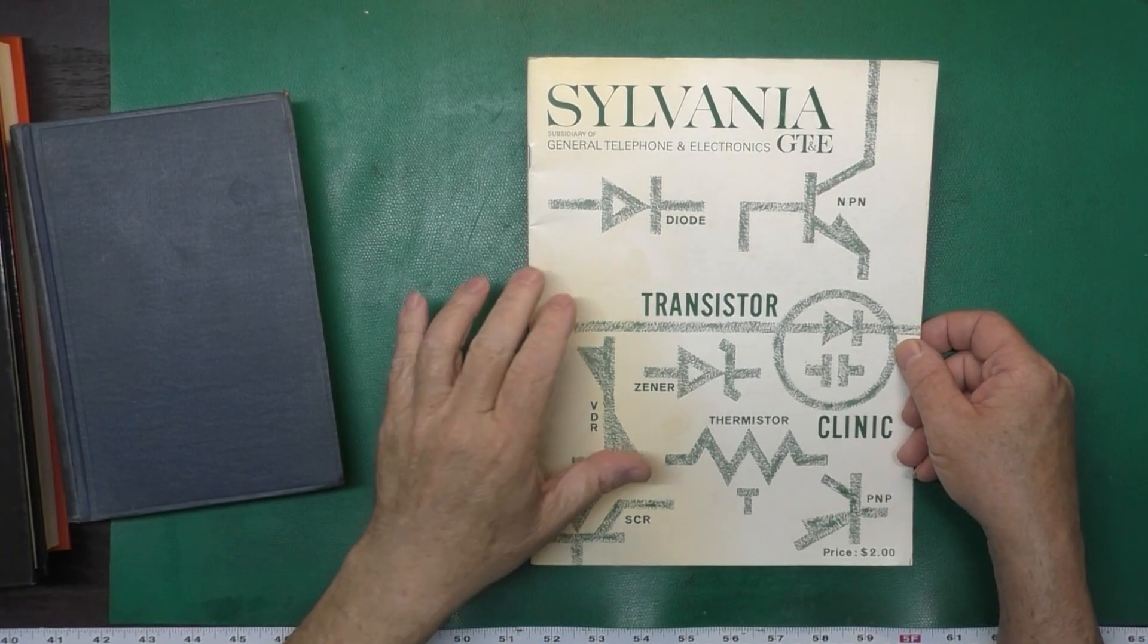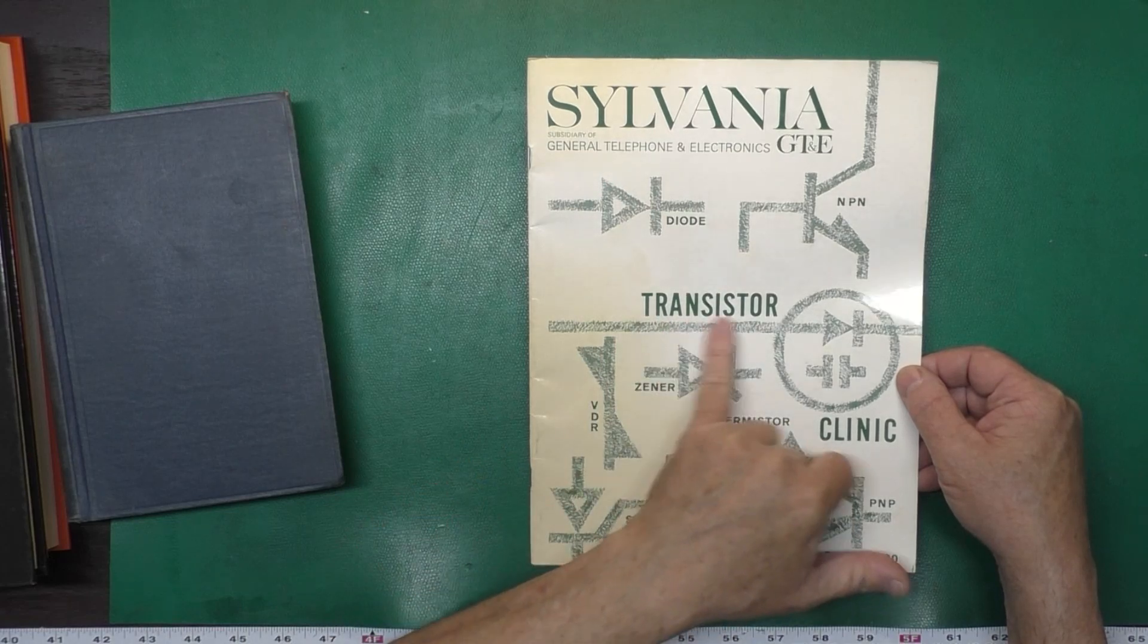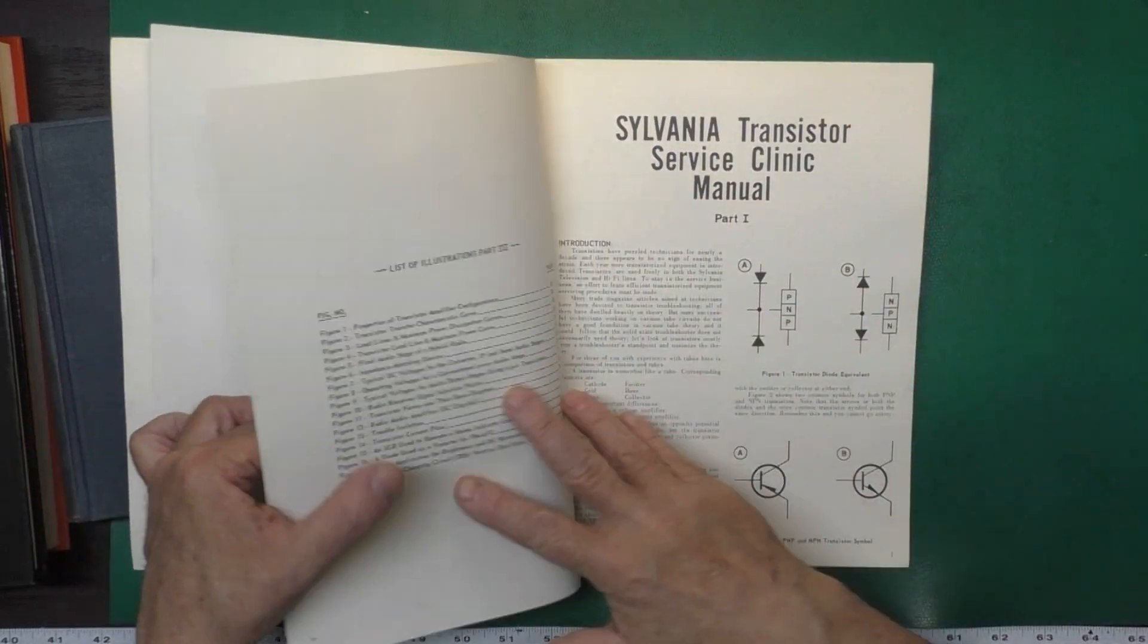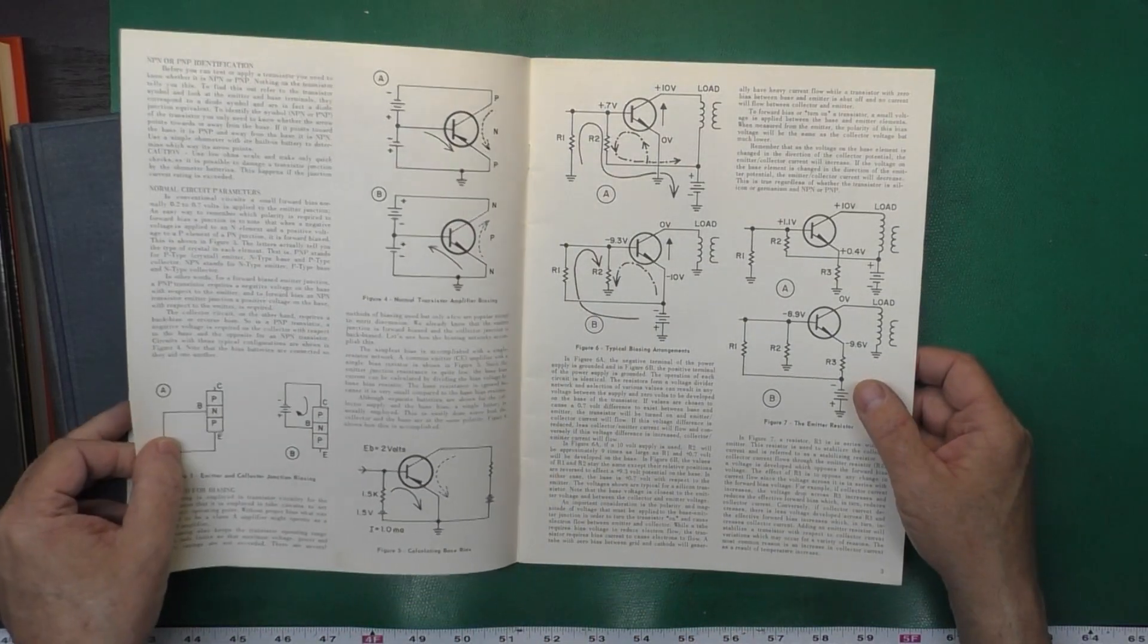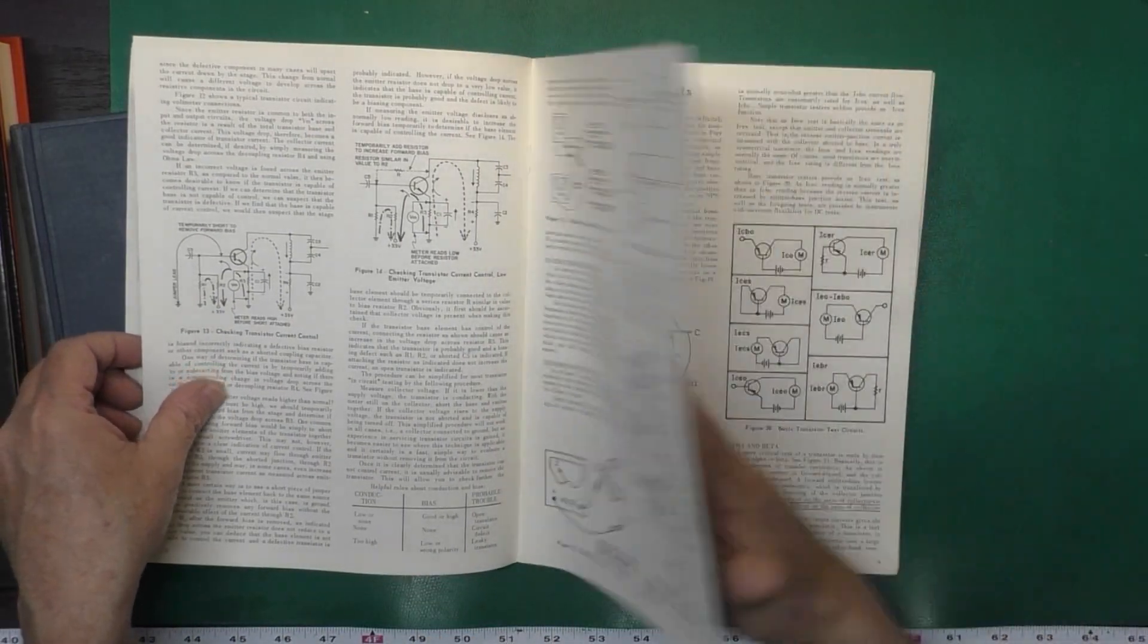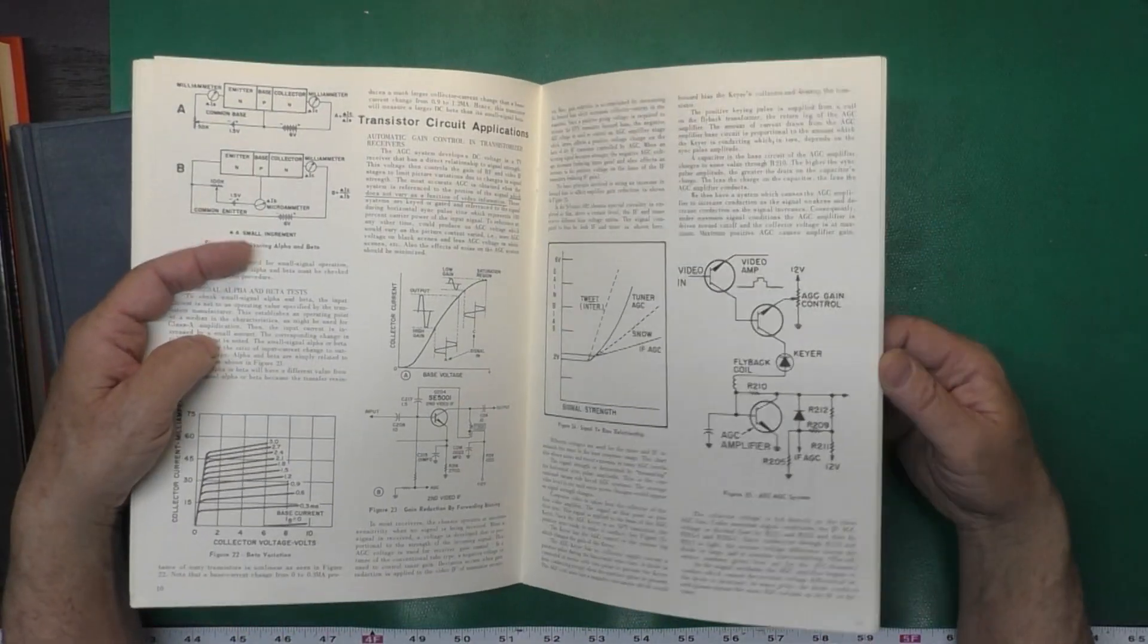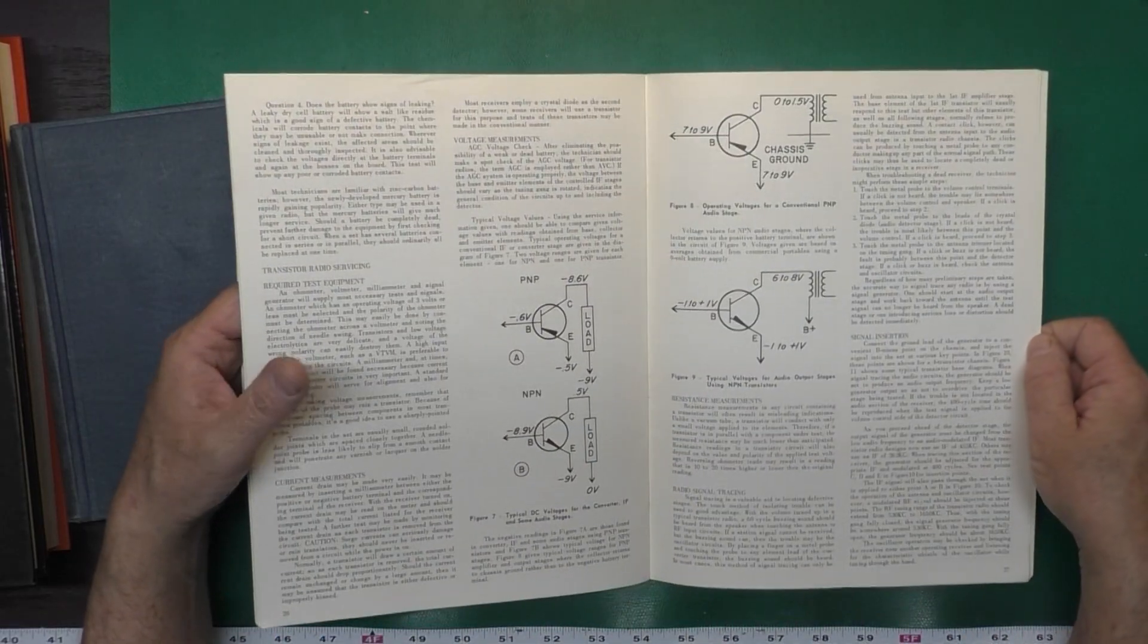And here we have the Sylvania slash GTE transistor clinic handbook, price $2, revised to May 1967. Again, older than I am. And if you look through this book, you see that it's talking about transistors in general, how they're made, the PN and NP junctions, the current flow through them, that type of thing, different transistor circuits. Again, this is all very practical information, testing transistors, transistor circuit applications. And a lot of these applications are things that were in vogue at the time, like TVs and things like that. Very nice book.